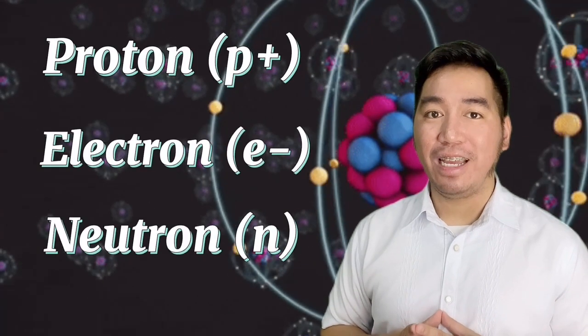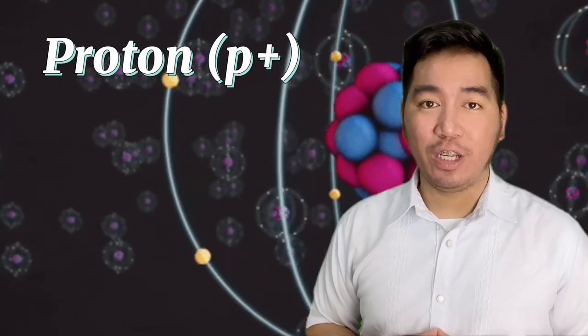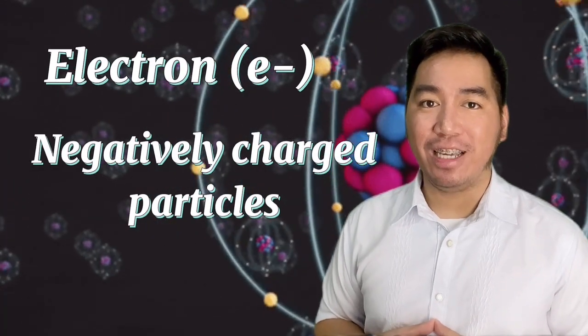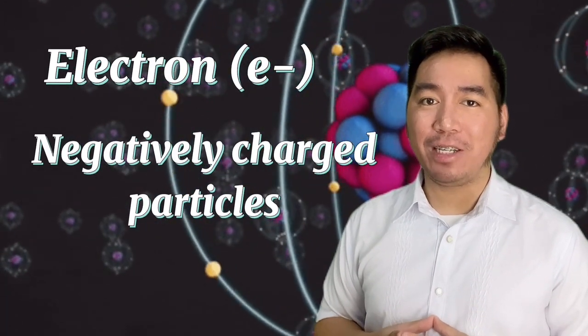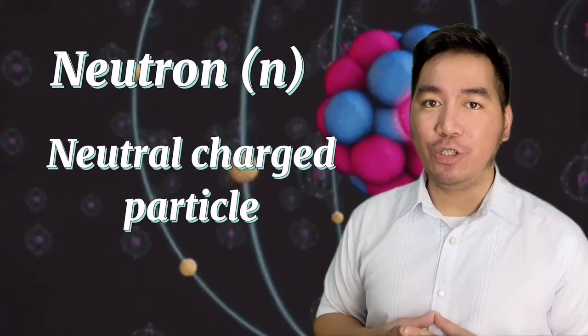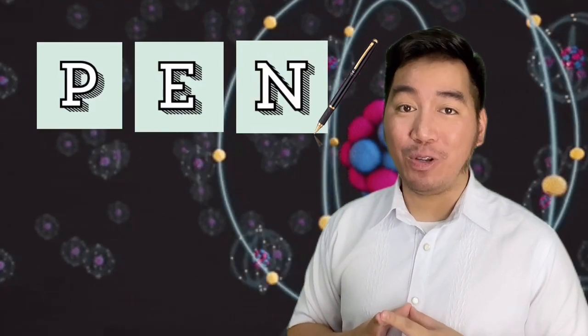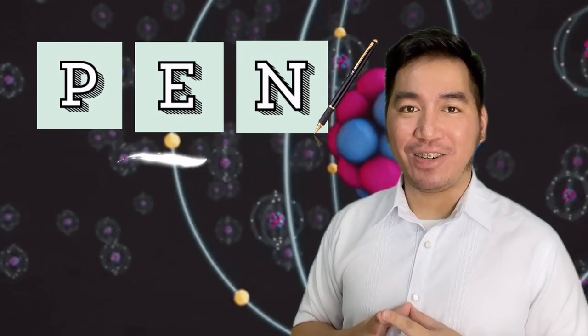Are you familiar with the three subatomic particles? We have proton, electron, and neutron. Proton is the positively charged particles in an atom, while electron is the negatively charged particles inside of an atom, while neutron is the neutral charge of an atom. The easy way to remember the subatomic particles of an atom is to remember PEN. P stands for proton, E stands for electron, and N stands for neutron.